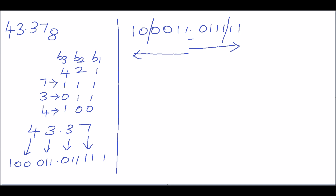The second group before the fractional point is 1, 0. Now we will write the individual groups: 1, 0, then 0, 0, 1, 1, then 0, 0, 0, 1, 1, 0.